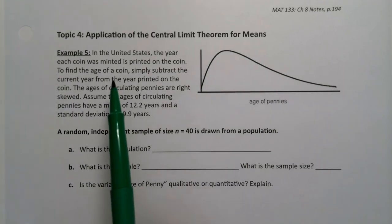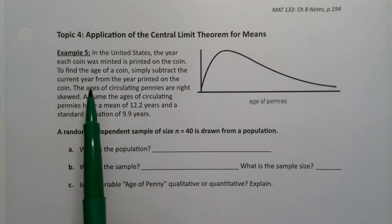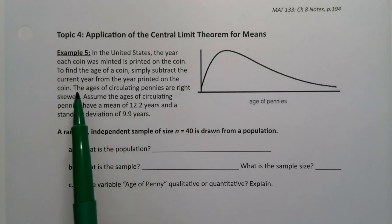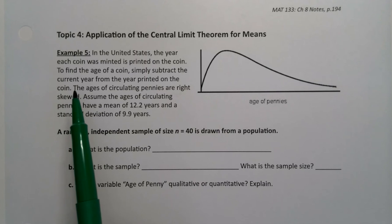So in the United States, the year each coin was minted is printed on the coin. To find the age of a coin, simply subtract the current year from the year printed on the coin. In other words, let's say you have a coin in your pocket, it was minted in year 2000, you would just subtract. So if it's currently 2020, you'd subtract 2020 minus 2000 and you'd know the coin is 20 years old.